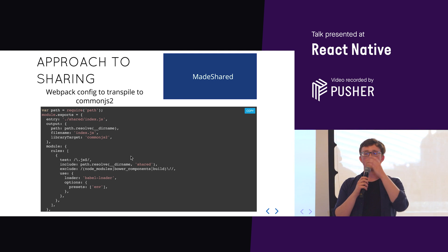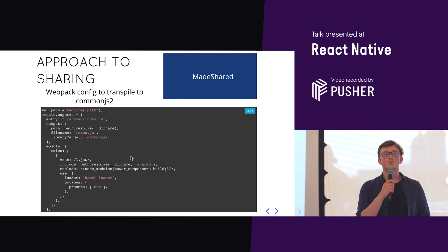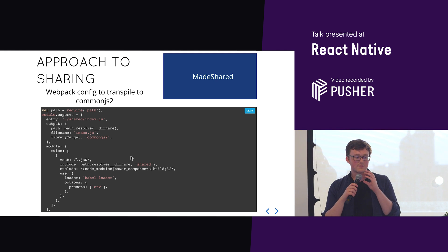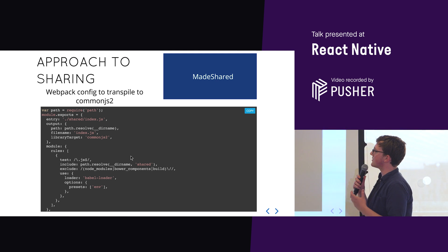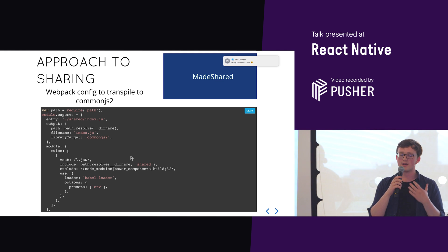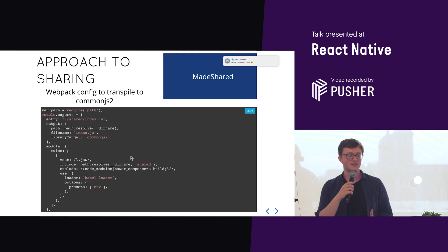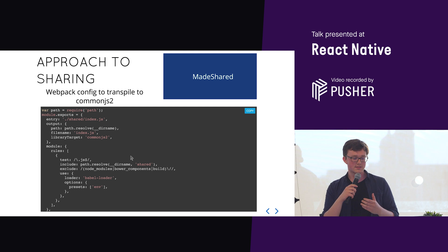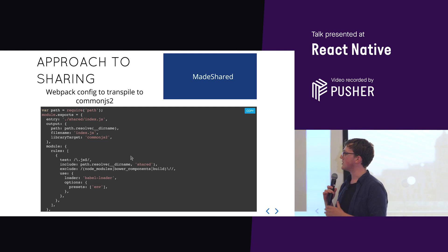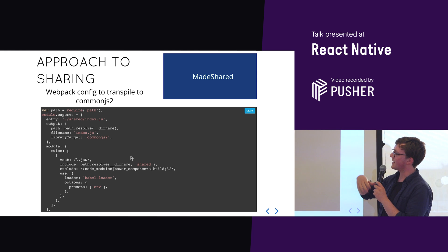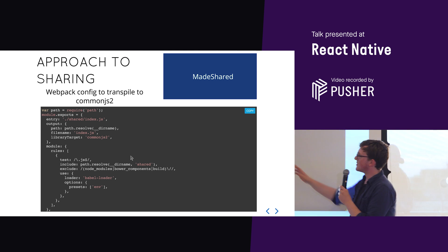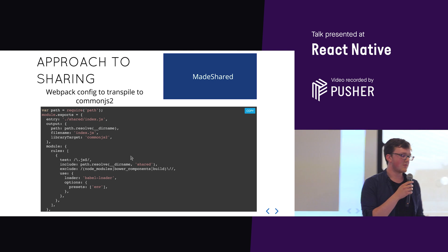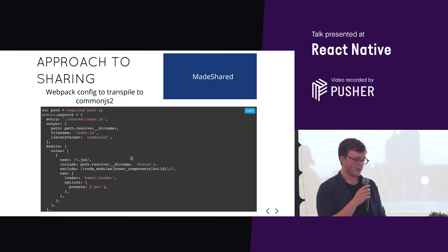Going back to the shared library — we transpile to CommonJS. We spent some time figuring out how to do this because we didn't really want to transpile our code, but after trying to avoid it, we realized it was really the best way. The common standard for node modules is to transpile to CommonJS. We used a Webpack configuration to build into CommonJS2, which allows exports from your library. It's a generic Webpack configuration with Babel.